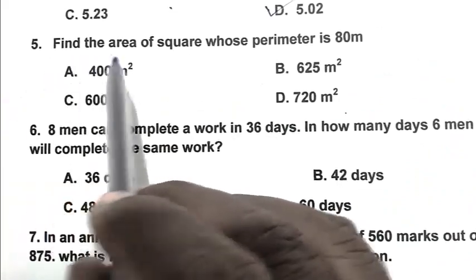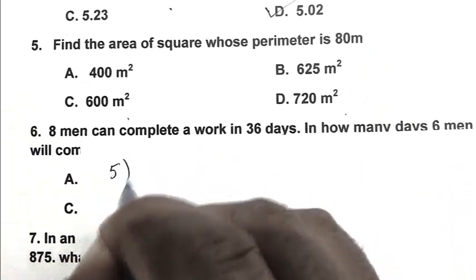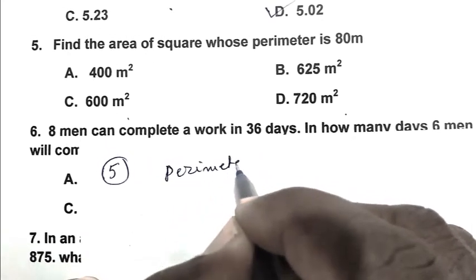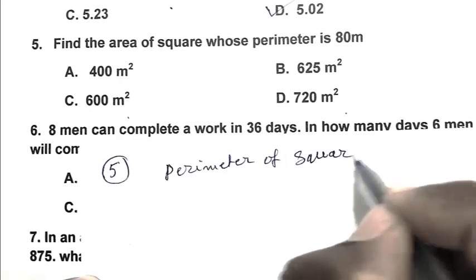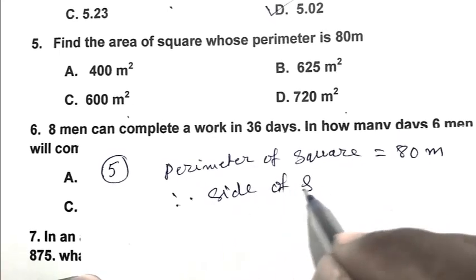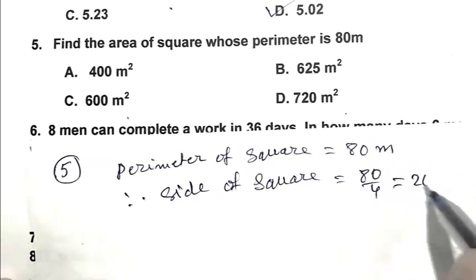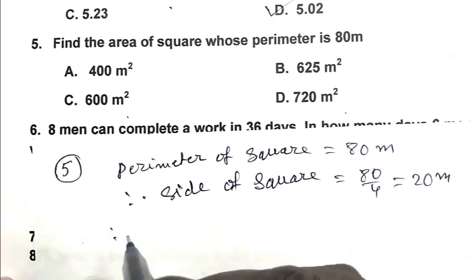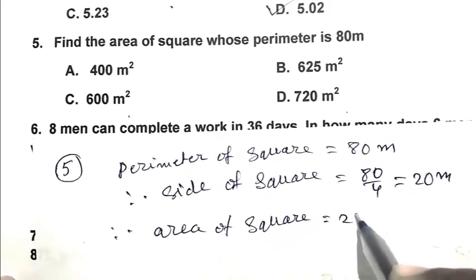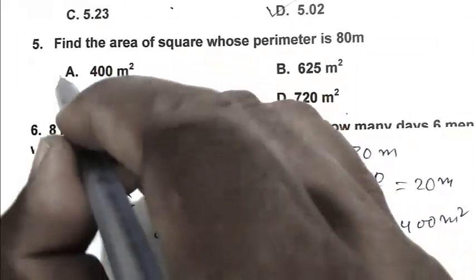Question number 5. Find the area of square whose perimeter is 80 meter. Perimeter of square is 80 meter. Therefore side of square is 80 by 4. That is 20 meter. Therefore area of square is 20 square. That is 400 meter square. So A is the right answer.